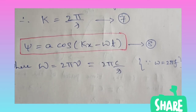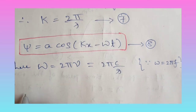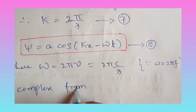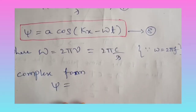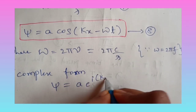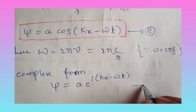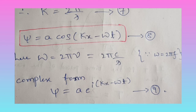This equation can also be written in complex notation. In the complex form, it becomes psi equals A times e to the power of i(kx minus omega t). Call this equation number nine. Here the real part of the complex representation represents the wave.